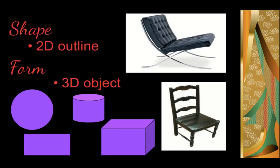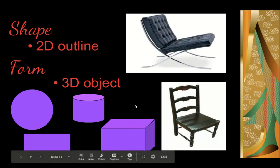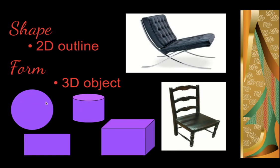Our next element of design is shape and form. I consider it the same element because we're just looking at two different views of an object. Shape is the two-dimensional outline — like circles or rectangles. If I took this chair and looked at the two-dimensional outline, I'd say something like L-shaped, two dimensionally. Form is the three-dimensional object — when you look at the whole thing, we get cylinders, rectangular prisms, and spheres from our three-dimensional objects, rather than just the two-dimensional outline.